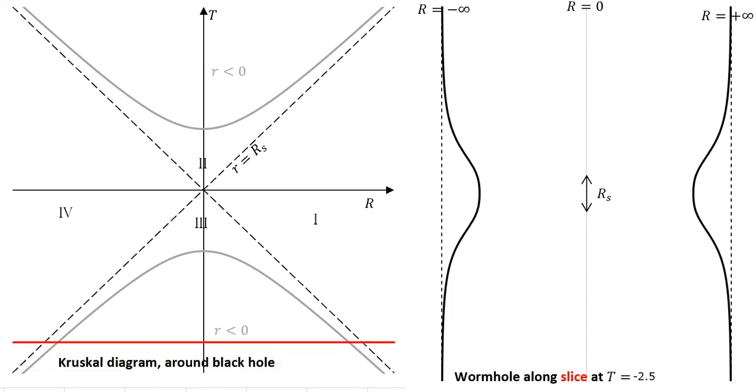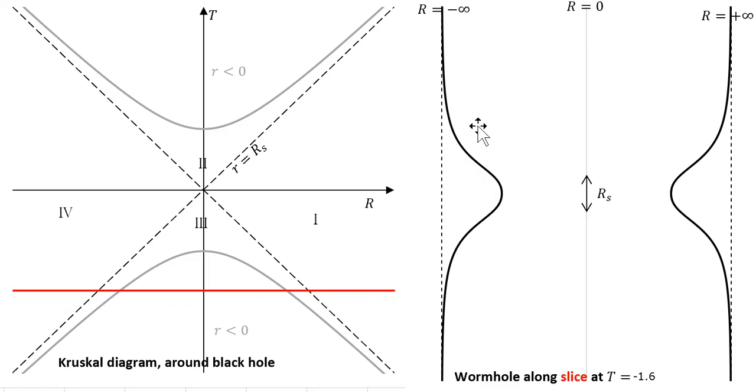And here we go. You can see the area of space here. The dashed line here is R equals minus infinity, so that's well over in region 4.